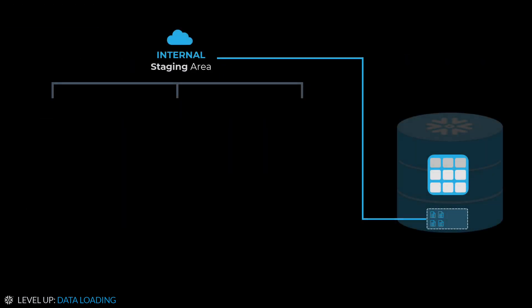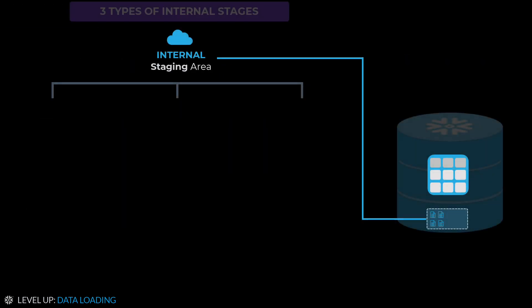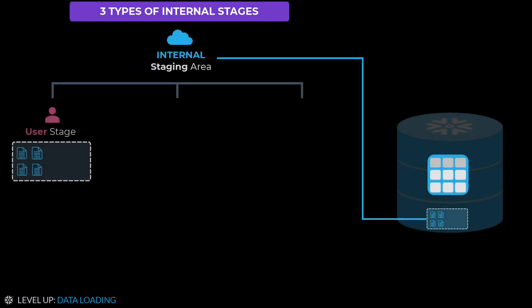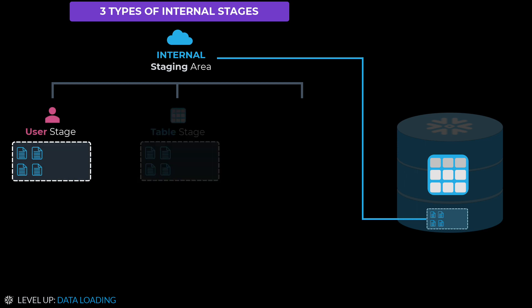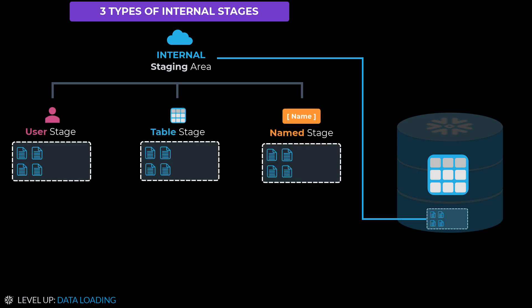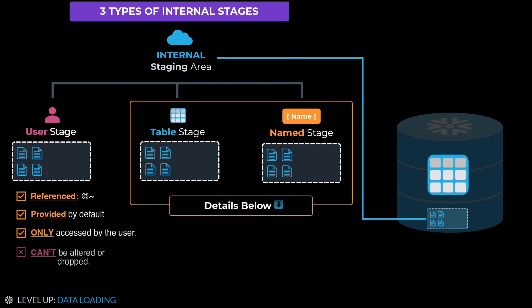There are three types of internal stages: a user stage, a table stage, and a named stage. The user stage, referenced using the at plus tilde symbol, is provided to every user by default for storing files. It can only be accessed by the user and cannot be altered or dropped.